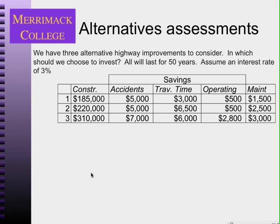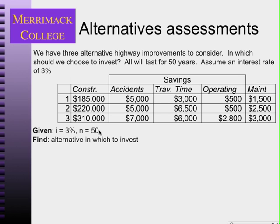We have three alternative highway improvements to consider — number one, two, and three — with construction costs for each. The savings represent the benefits due to the improvement. For example, this $5,000 is the savings in accidents that don't occur because we built alternative one — a differential benefit over doing nothing. Same for travel time and operating costs. The maintenance costs are the costs associated with each alternative. We're given the interest rate and number of periods, and we want to know which alternative to use.